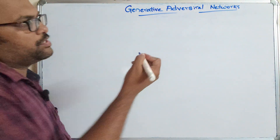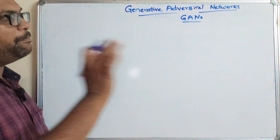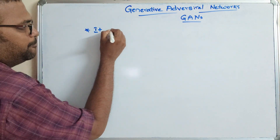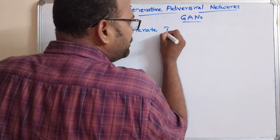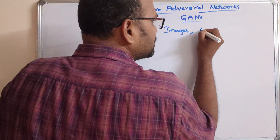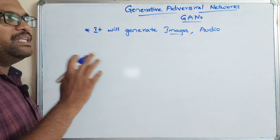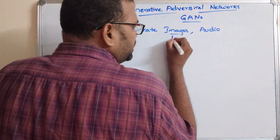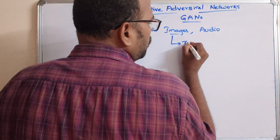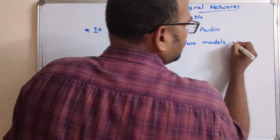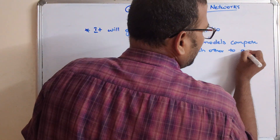Generative adversarial networks, which we will call GANs. There are a lot of GANs. The main aim is to generate images — realistic images as well as audio — mainly images in a realistic way. In order to generate these images, GANs mainly follow two models that compete with each other to generate images.